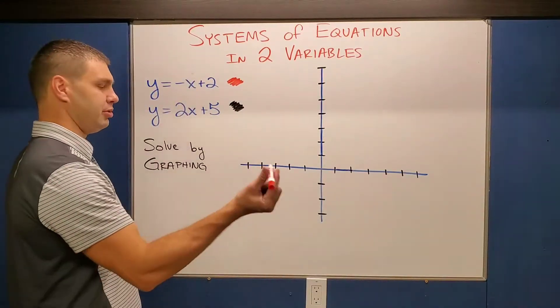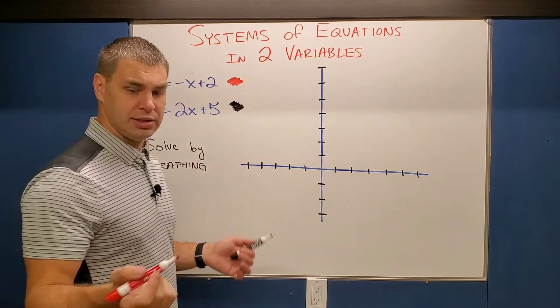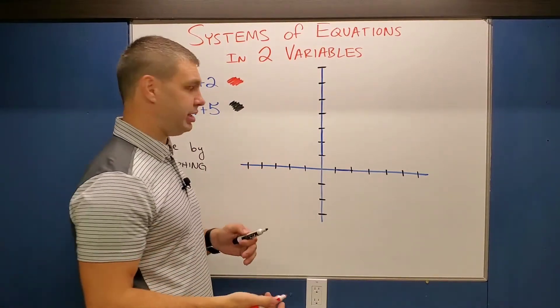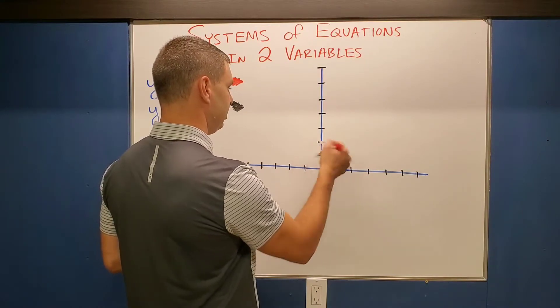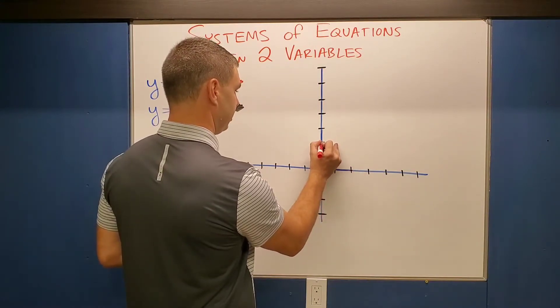For example, I'll do the red one here, which is y equals negative x plus two. So this is in the form y equals mx plus b. I'm starting at the b, which in this case is a positive two. I'll make a space there.